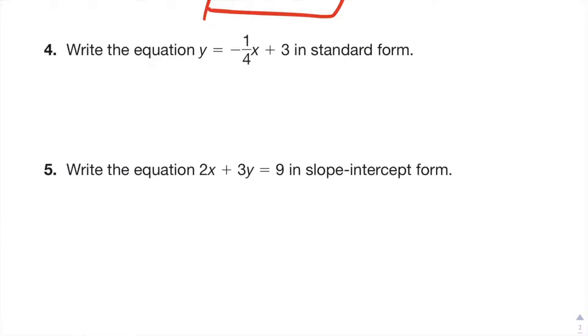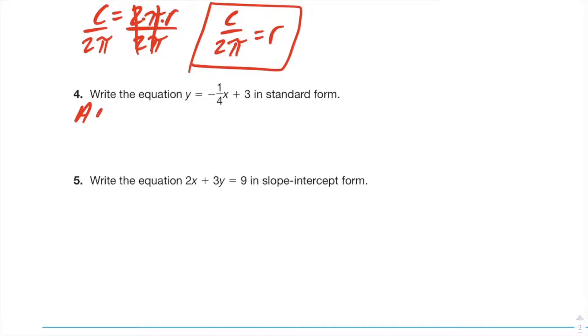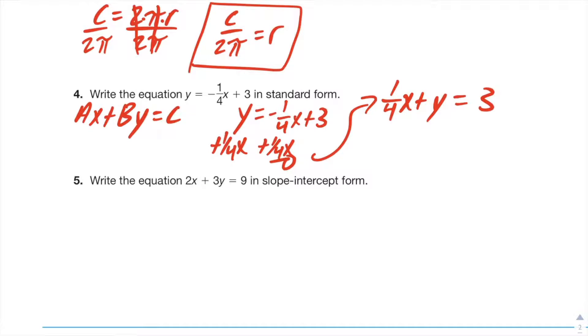Number four: Write the equation y = -1/4x + 3 in standard form. So let's not forget standard form is Ax + By = C. So let's go ahead and move this thing around. I'm going to add one-fourth x to both sides. And you're going to have 1/4x + y = 3, and you're done. Because A in this case is right here, B is going to be one, C is going to be three.